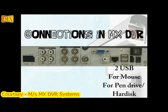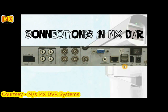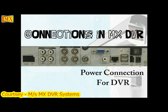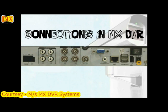Next you will see two USB options. One is used for the mouse, to control the options available in the DVR. The other USB connection is used to retrieve data using a pen drive or a hard disk. Next is the power option for the DVR — each DVR needs a power connection and an on/off button.